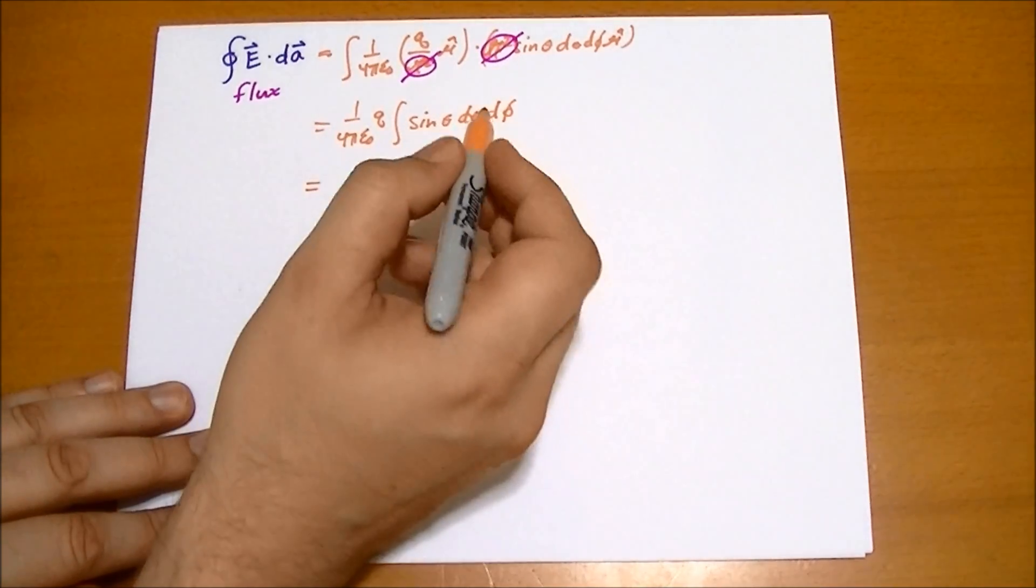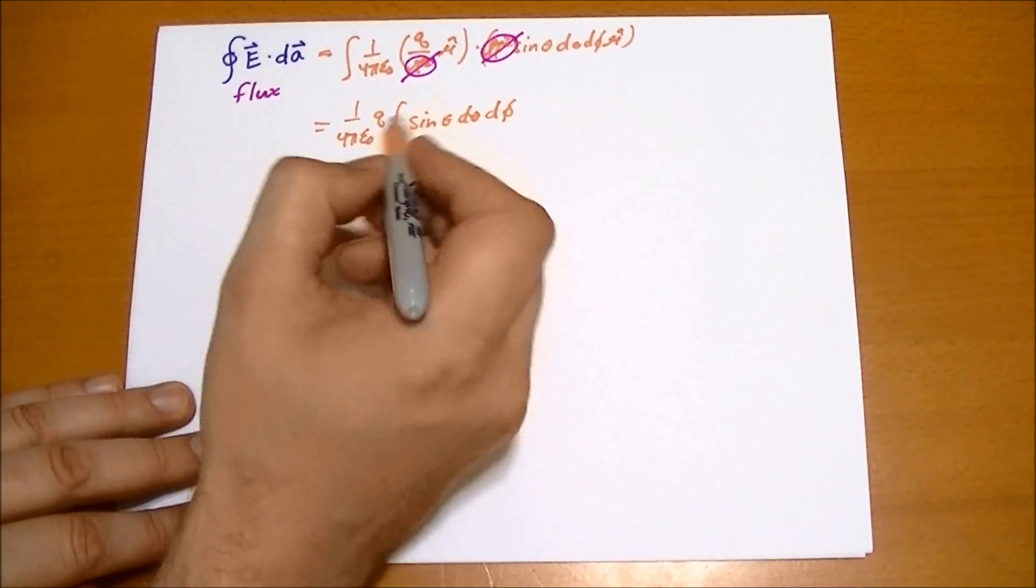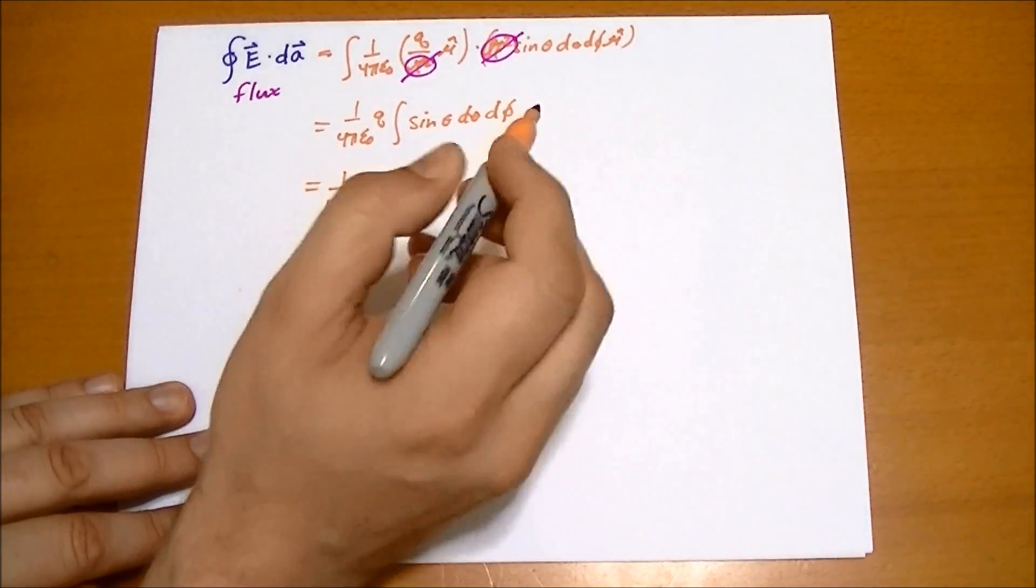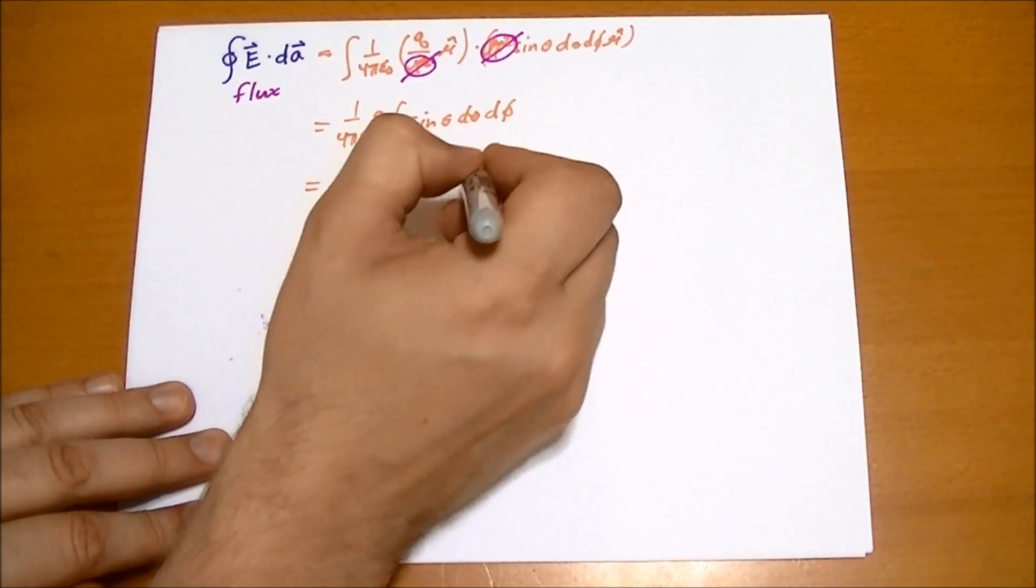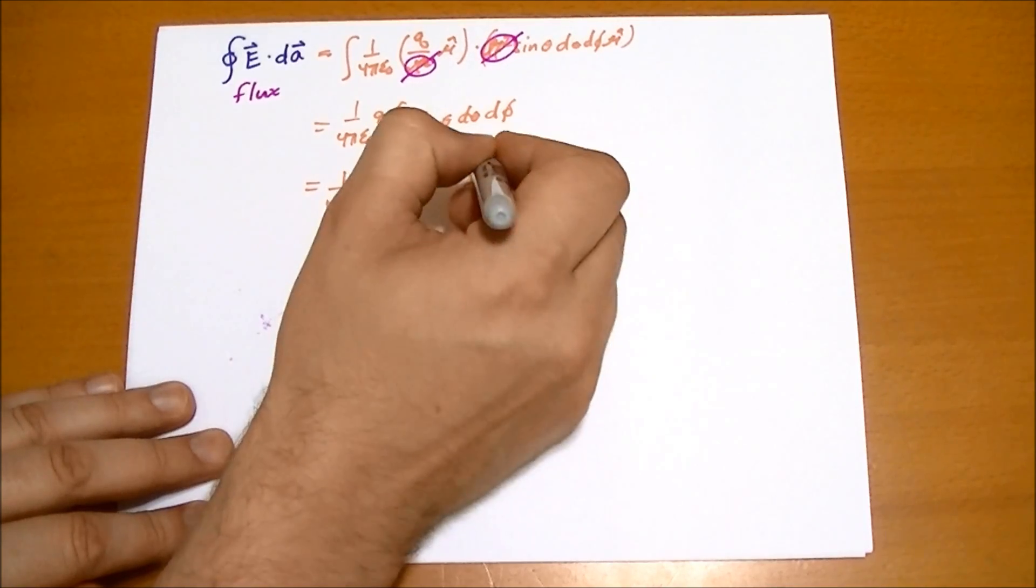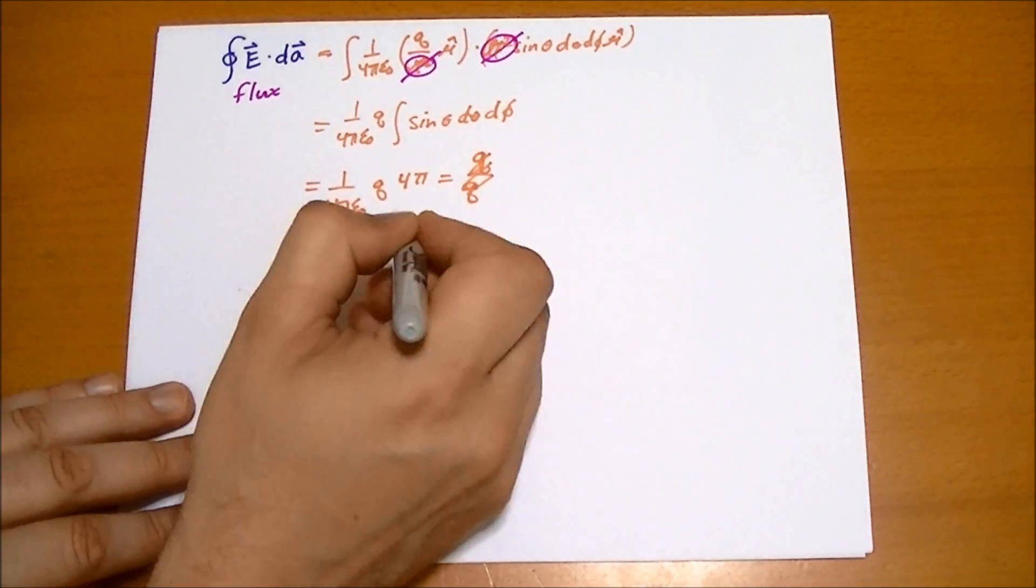So the d phi component gives you 2π, the sine theta gives you 2, so you get a total of 4π. So you get 1 over 4π epsilon naught q of 4π, and so the end result is—let me write that again—1 over epsilon naught times the charge q.